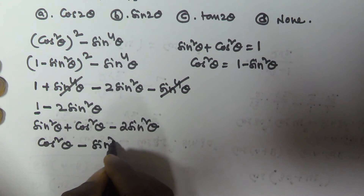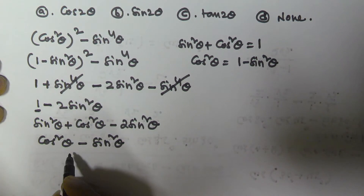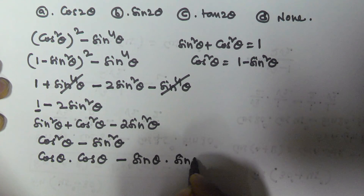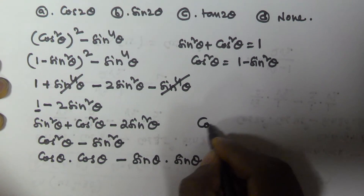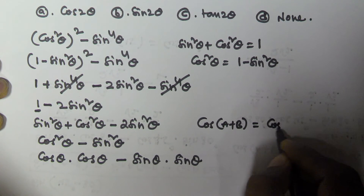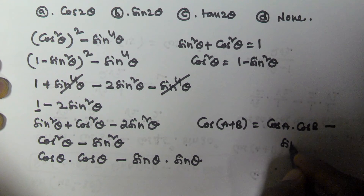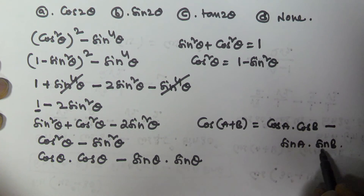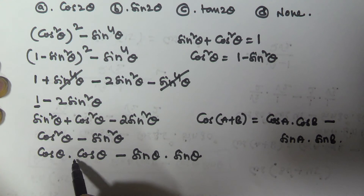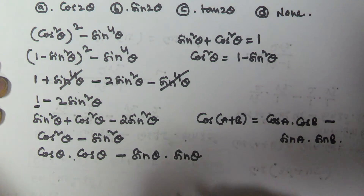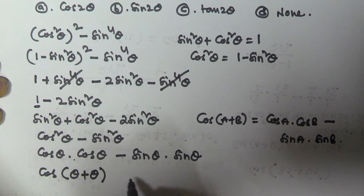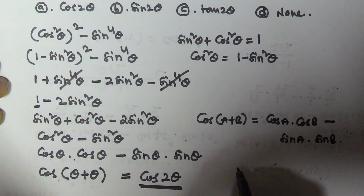Now cos squared theta minus sine squared theta can be written as cos theta times cos theta minus sin theta times sin theta. We know the formula cos(A + B) equals cos A cos B minus sin A sin B. Here A and B are both theta, so this equals cos(theta + theta), which is cos 2 theta.